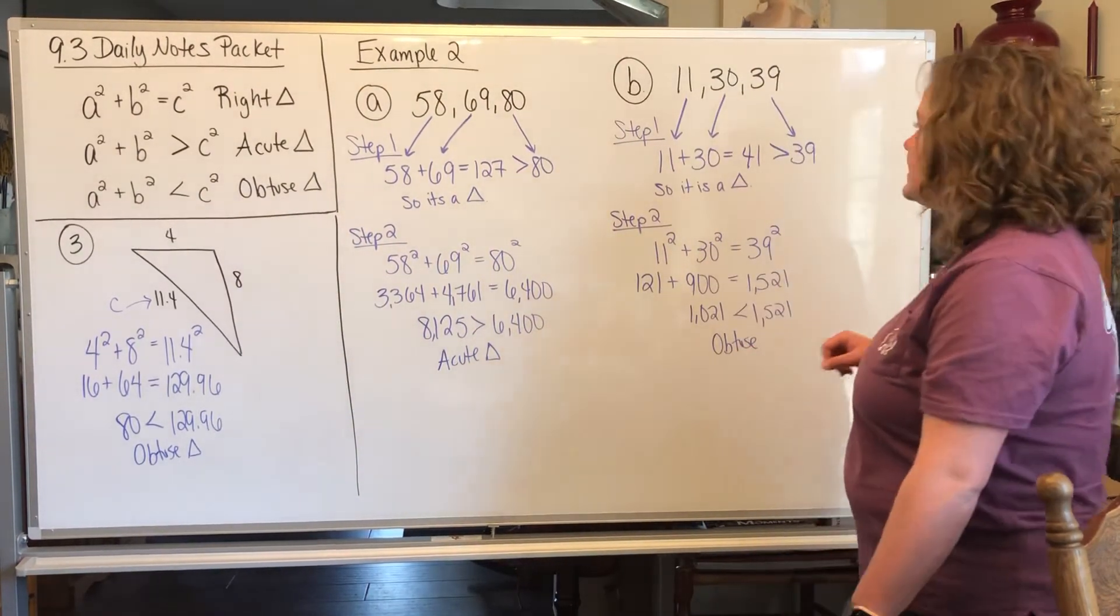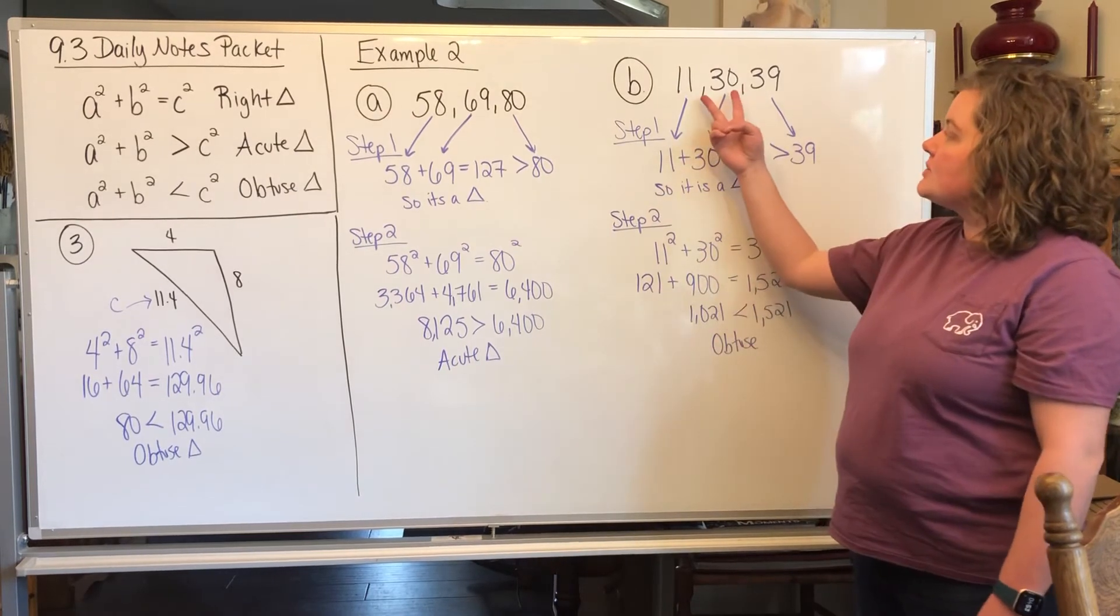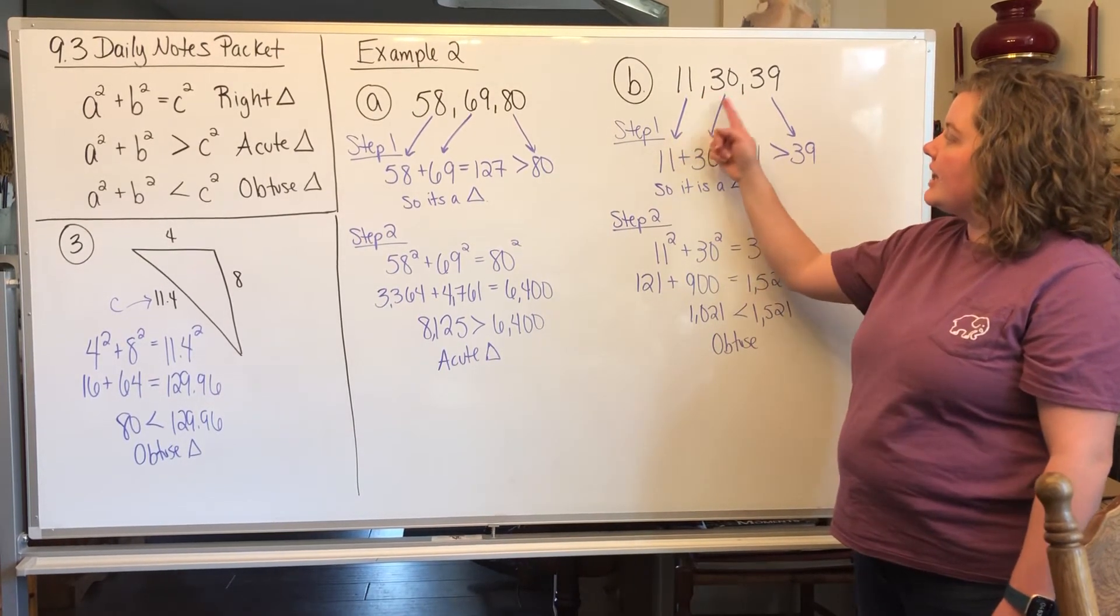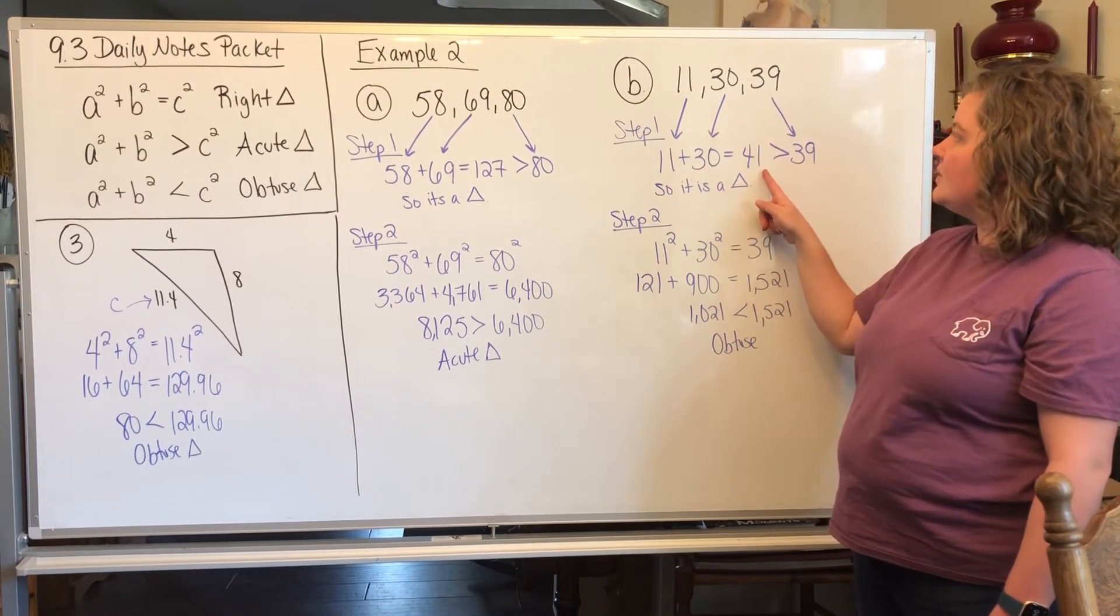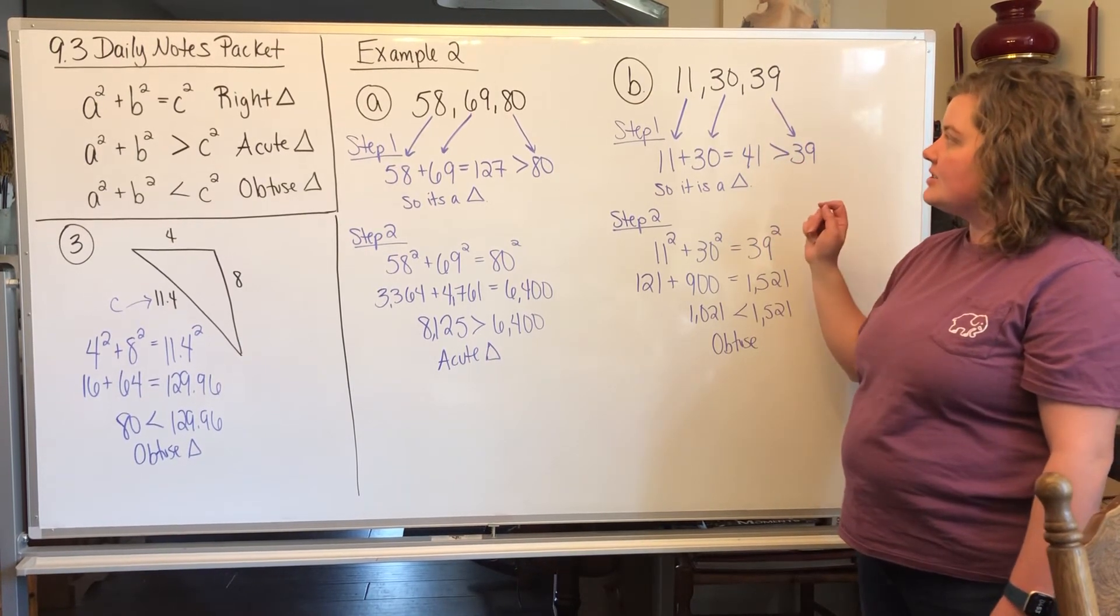Okay, so for part B, it's the same thing. You're going to take the two smaller numbers, so 11 and 30, you're going to add them together, you get 41, which is bigger than 39, so this is a triangle.